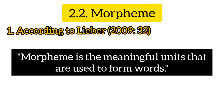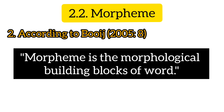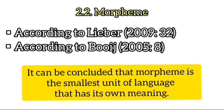According to Lieber, a morpheme is the minimal unit that is used to form words. According to Booij, a morpheme is the morphological building block of words. From these two experts, morpheme can be concluded as the smallest unit of language that has its own meaning.